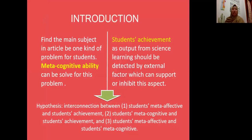Another aspect of science learning is that students should define the main subject, and Meta-Cognitive can develop this ability. Student achievement is the output from science learning and will be checked by external factors. The hypothesis for this article is: is there any interconnection or correlation between student Meta-Affective and student achievement, student Meta-Cognitive and student achievement, and student Meta-Affective and student Meta-Cognitive?